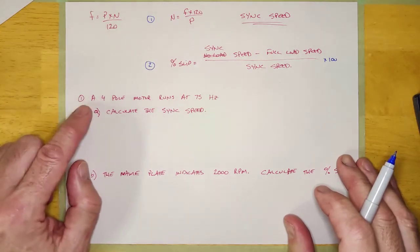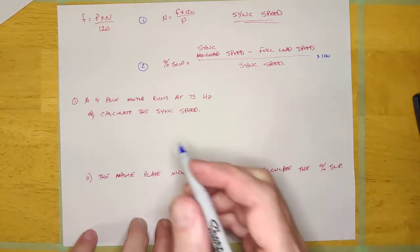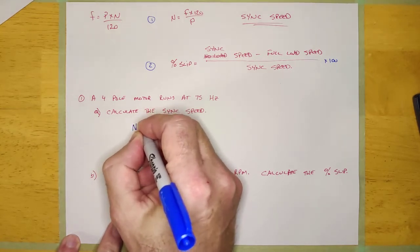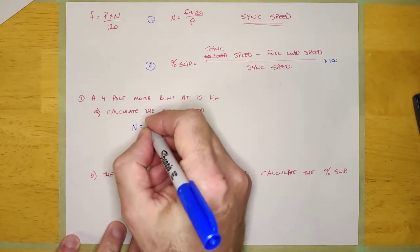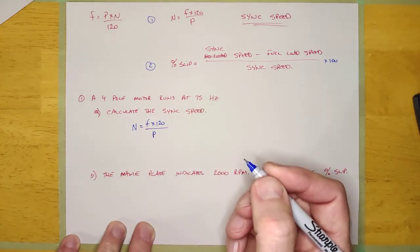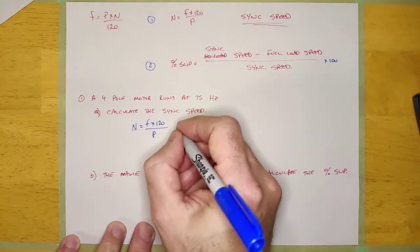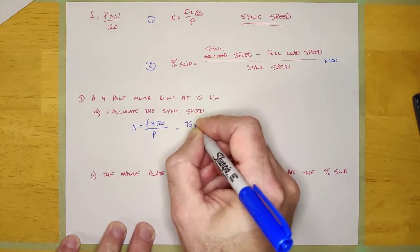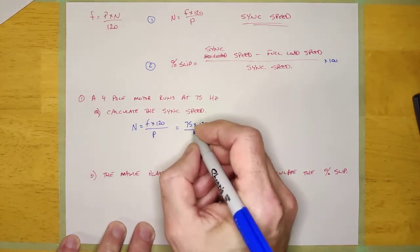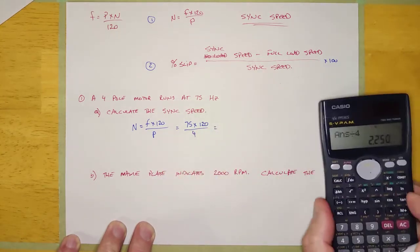So a four-pole motor runs at 75 hertz. It says calculate the sync speed. Well, let's calculate the sync speed. The formula is N, which is speed, is equal to F times 120 over P, which is the number of poles. And so the frequency is 75, guys, and 120 is just a constant. And P stands for the number of poles, which is four. And if I calculate that, let's do it right here.